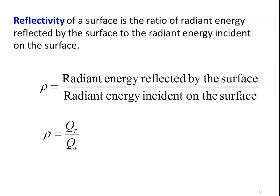Reflectivity of a surface is the ratio of radiant energy reflected by the surface to the radiant energy incident on the surface. Rho equals QR divided by QI. An example is the white surface, where reflectivity equals 1. The white surface is the extreme — it reflects all the energy, neither absorbing nor transmitting. That is why we prefer white sheds during summer: they reflect all the energy, do not absorb it, so the temperature effect on the body is minimized.